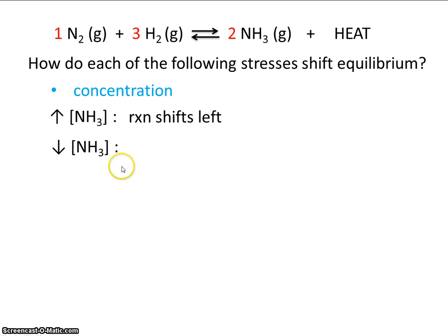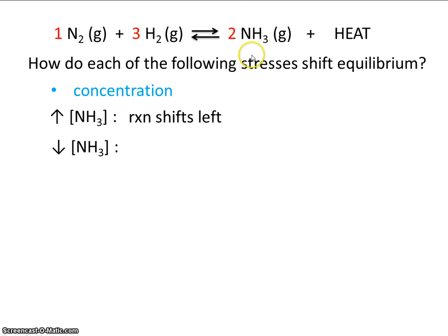Now suppose we decrease the concentration of ammonia. If the stress is decreasing the concentration of ammonia, the way that the reaction can reduce that stress is to make more of it, so the reaction shifts to the right.